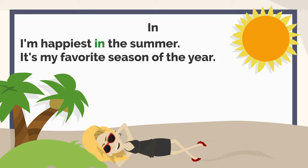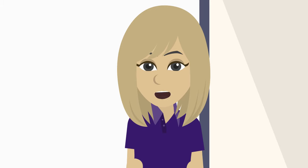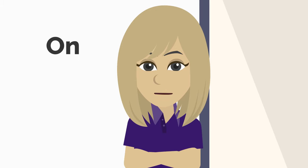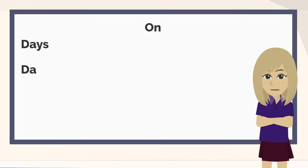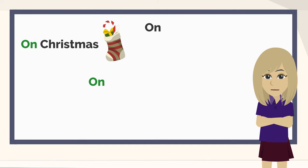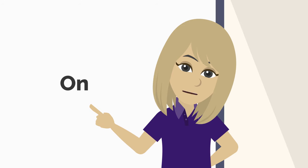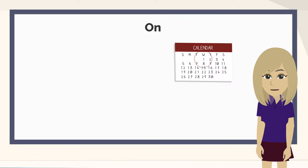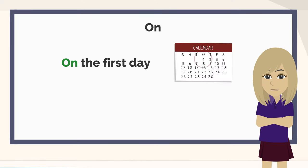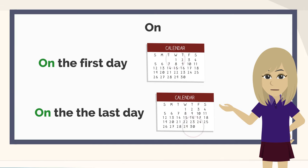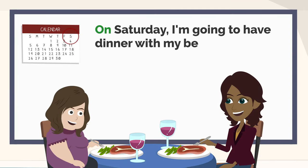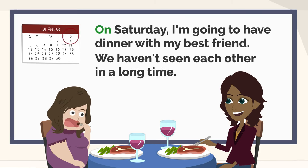And finally, let's look at 'on'. This is used for days and dates. For example: on Christmas, on his birthday, on Friday, on the first day, on the last day. On Saturday, I'm going to have dinner with my best friend. We haven't seen each other in a long time.